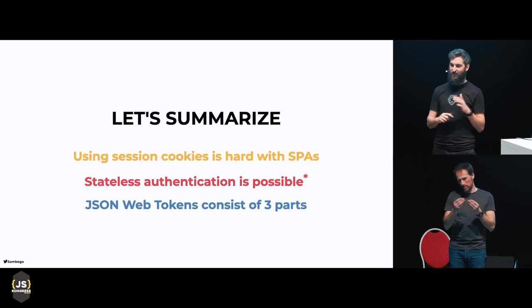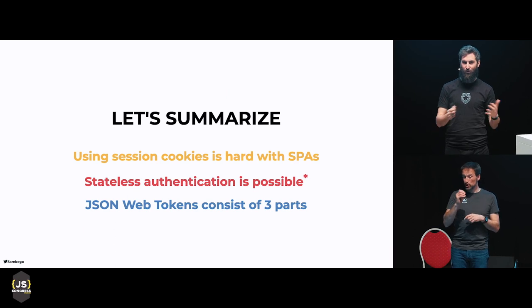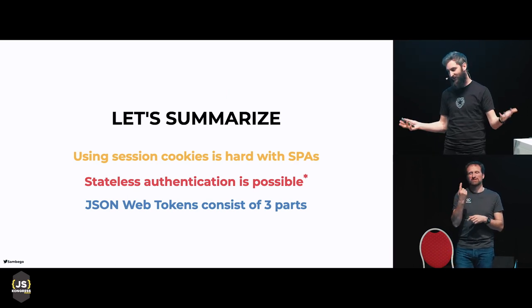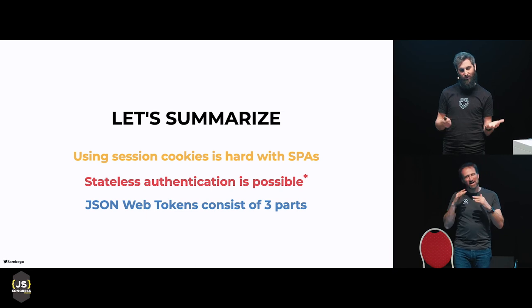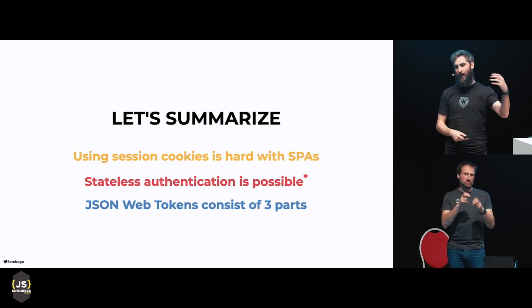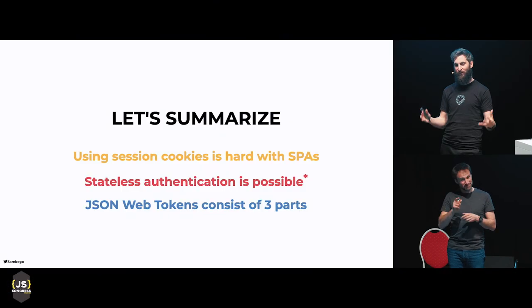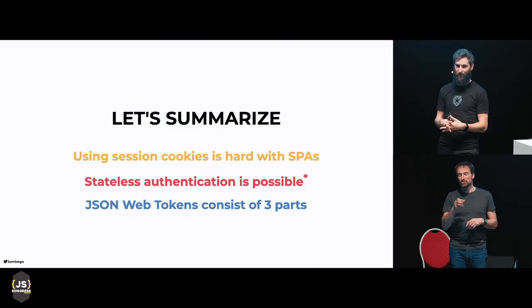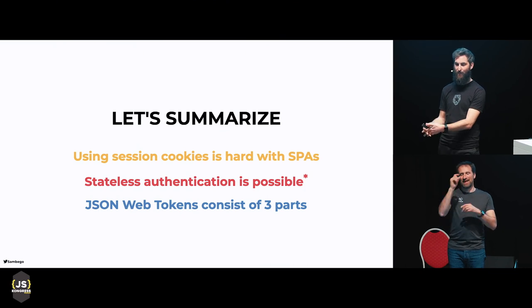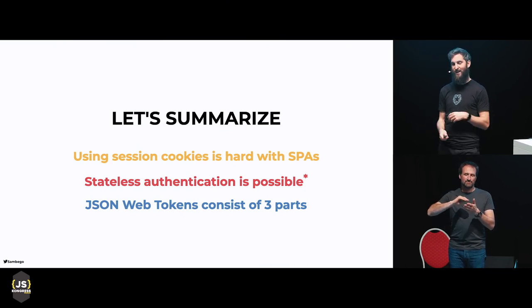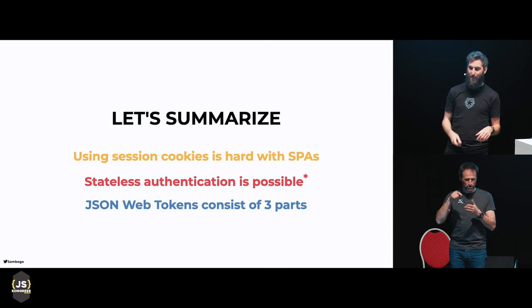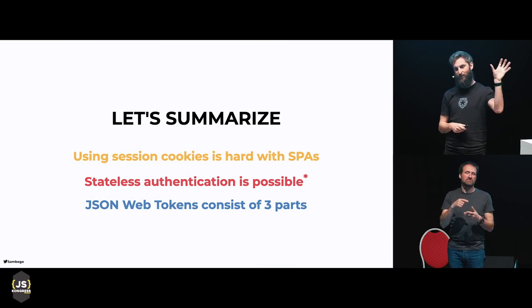So in practice, it does not fully solve state. To summarize: using session cookies is hard with single-page applications because of CORS, flow, state, and because cookies are really typical for the web but not for mobile or desktop apps. Stateless authentication is possible — asterisk — in theory. A JSON Web Token provides all the information you need to verify its authenticity and whether it's still valid, but because of security reasons, you do need a little bit more state. JSON Web Tokens consist of three parts: the header with metadata, the payload with any data you need, and the signature to verify validity.